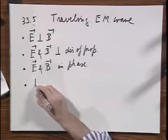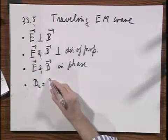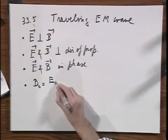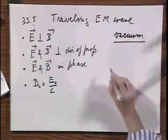And then B zero, which is the amplitude of the magnetic field vector, equals E zero divided by C when the electromagnetic radiation is in vacuum.